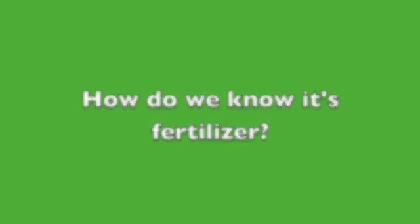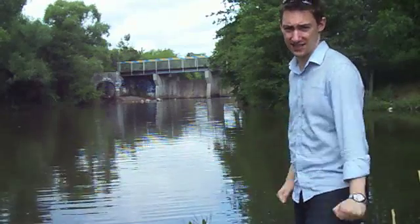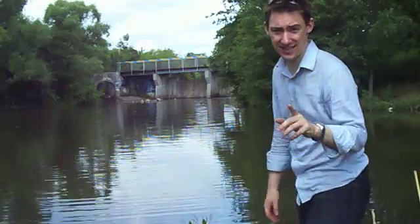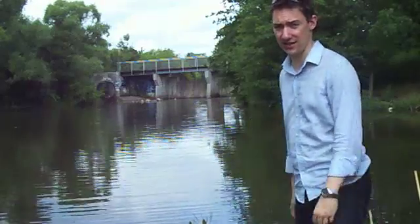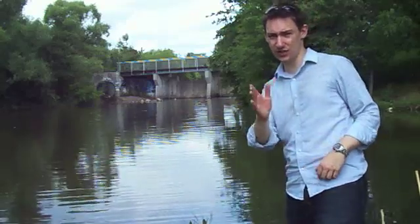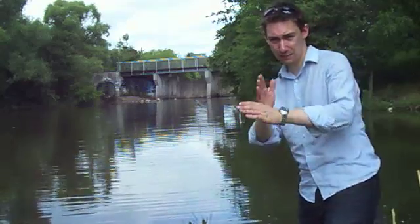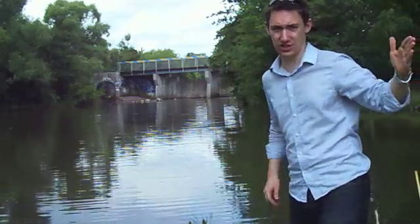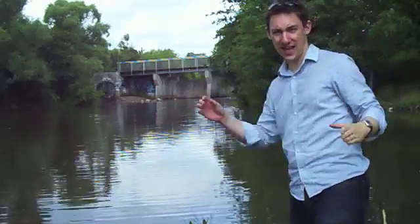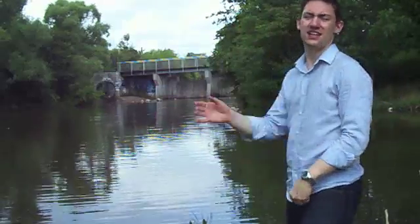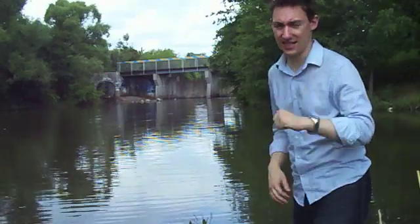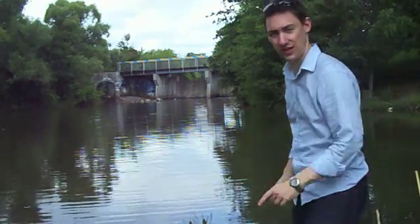We know that in lakes like this one it's phosphorus that causes the problem, because back in the day, in something called the Experimental Lakes Area up in northern Ontario, they took a lake and literally divided it in half. They put up a barrier so one half had normal conditions and the other half had phosphorus added to it. The side with phosphorus added had a huge amount of algae. The side without phosphorus was perfectly normal, like this one.